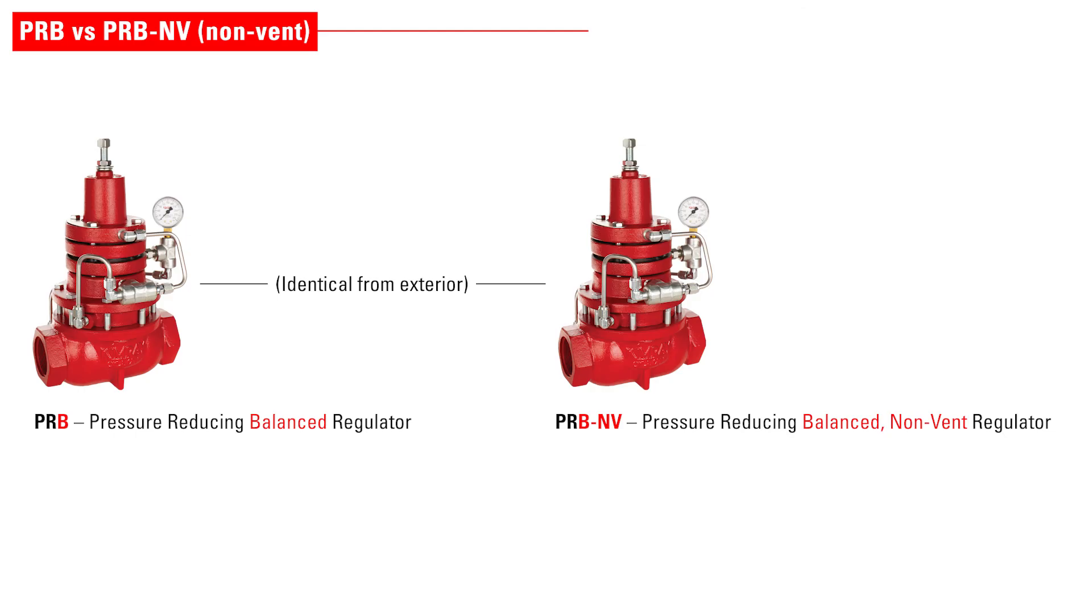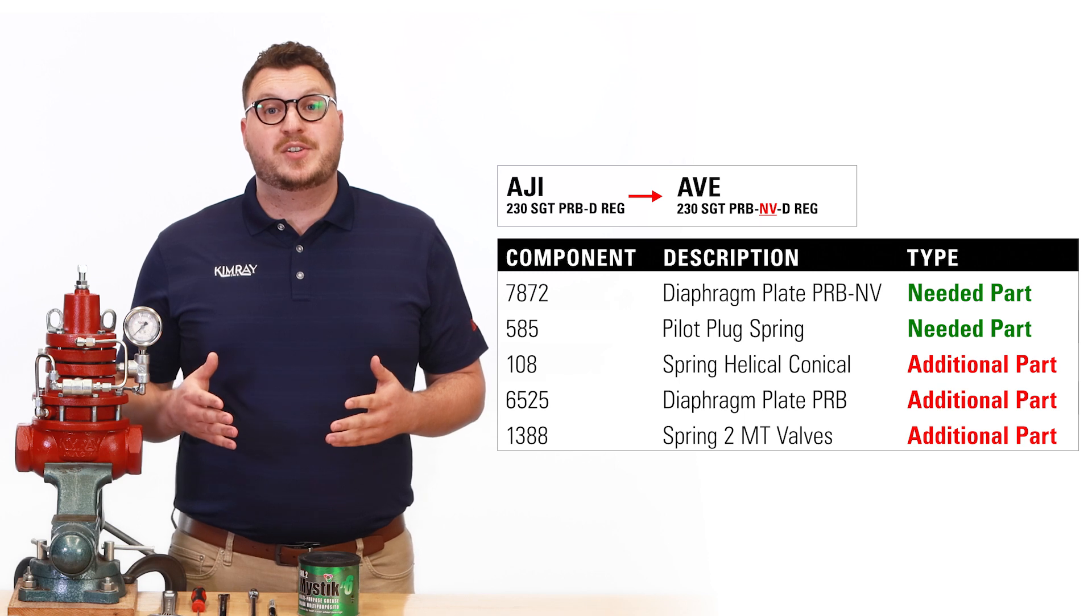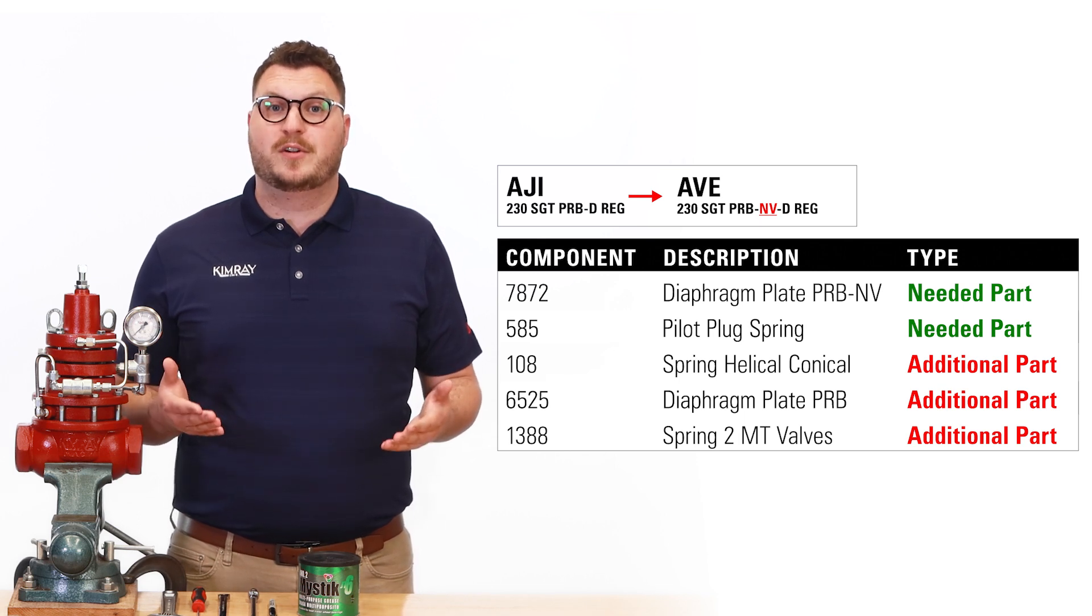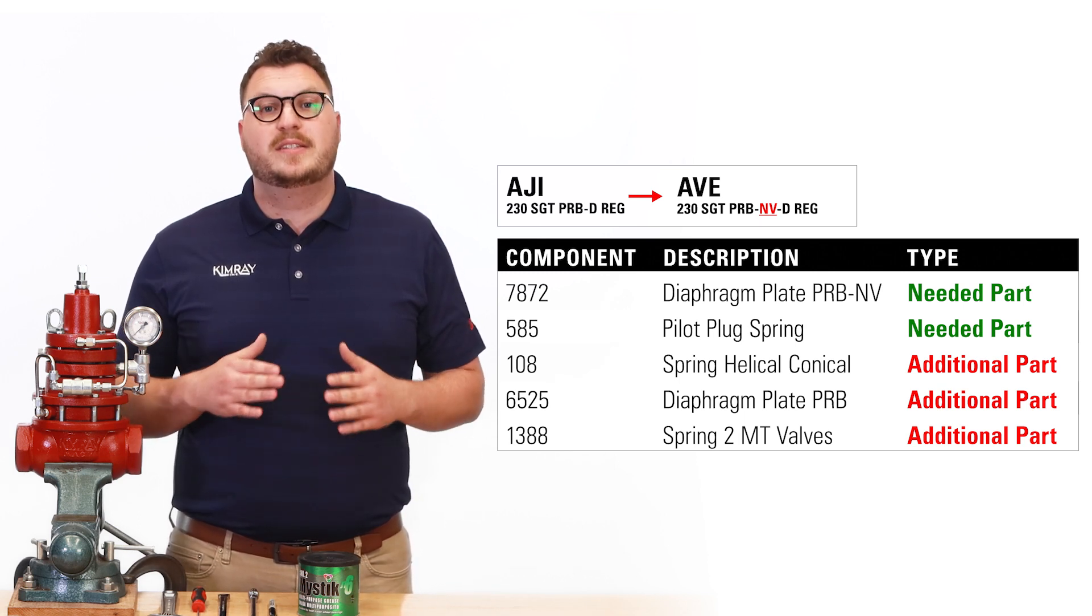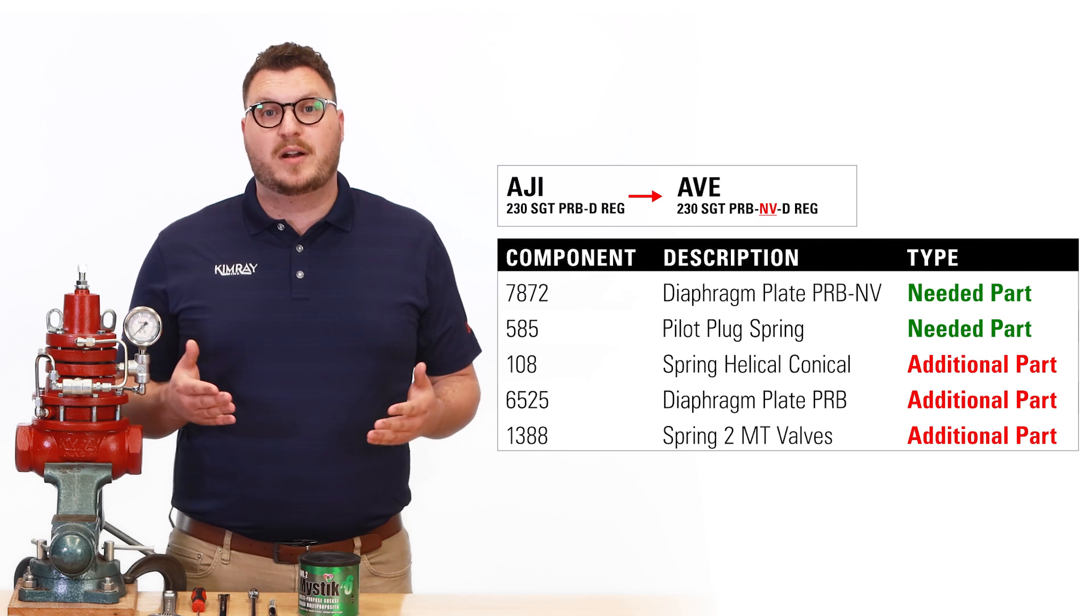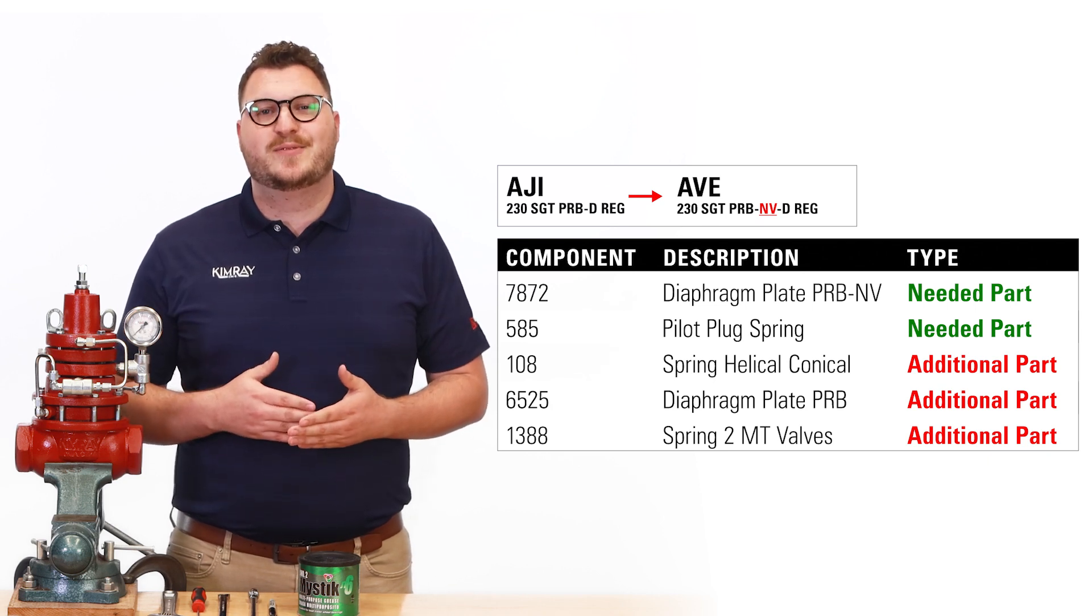The standard version of this valve is classified as non-bleed intermittent vent and meets many producers emission standards. However, if your goal is to eliminate emissions or you need to install your regulator inside of a building, we recommend using the non-vent PRB. You can achieve non-vent operation by purchasing a new non-vent version or by converting your existing PRB with a few simple parts, which we will be demonstrating in this video.